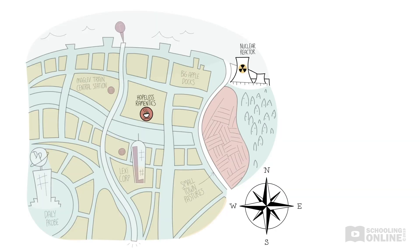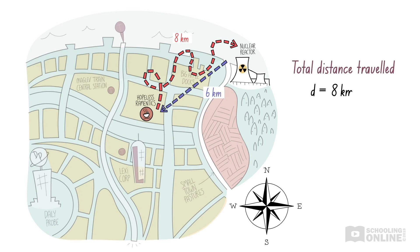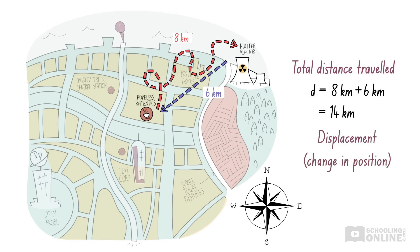To explain this further, let's consider Vector Man's excursion. After leaving the restaurant, he flew eight kilometres to reach the missile, then travelled six kilometres back to the restaurant. To find the total distance travelled, we add these numbers and get 14 kilometres. Next, remember that displacement is the change in an object's position. Since Vector Man started and finished at the restaurant, there is no net change in his location — therefore, his displacement is zero. In general, the distance that an object travels is always greater than or equal to the magnitude of its displacement.